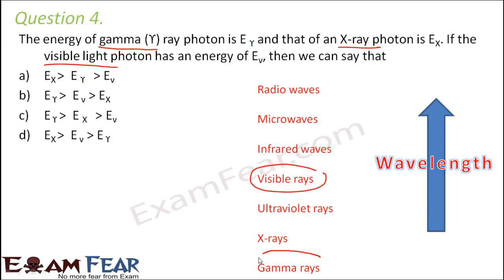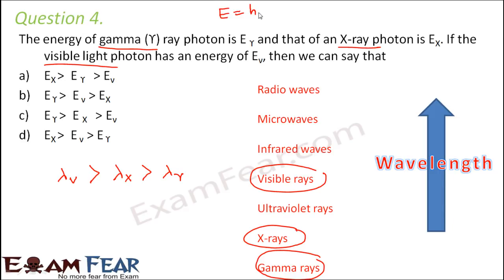Looking at the spectrum, the wavelength of visible light is greater than the wavelength of x-ray, which in turn is greater than the wavelength of gamma ray — because as we go up the spectrum, wavelength increases. We know that energy = hc/λ, so energy is inversely proportional to wavelength. A ray with more wavelength will have less energy. Therefore, the energy of visible light is minimum, and we can say Ev < Ex < Eγ. So option C is the correct answer.